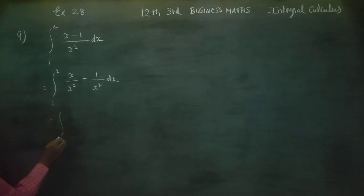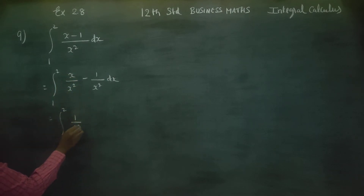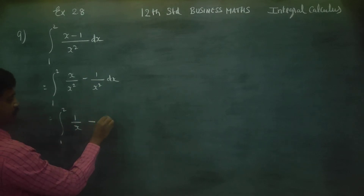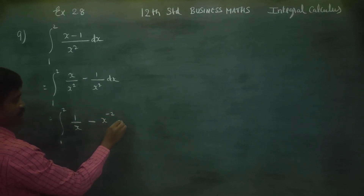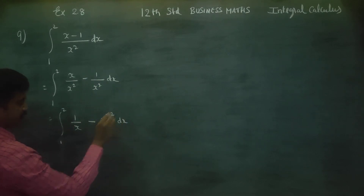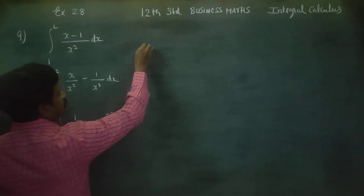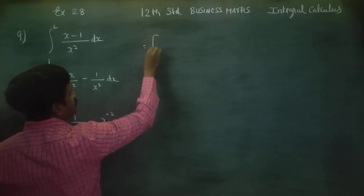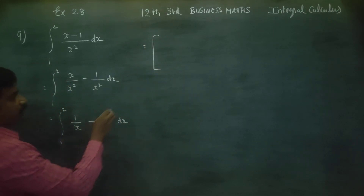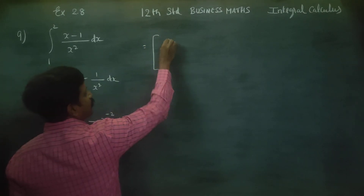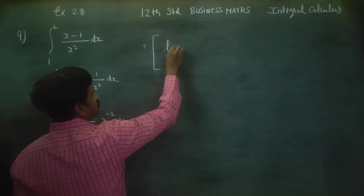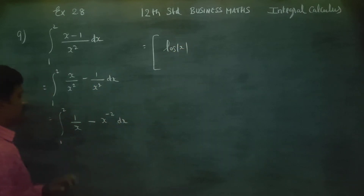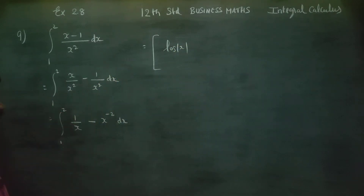Now, integration from 1 to 2: the first term 1 by x integrates to log x, and the second term 1 by x squared — which is x power minus 2 — integrates accordingly. So integration from 1 to 2 gives log x for the 1 by x term, and x power minus 2 for the 1 by x squared term.